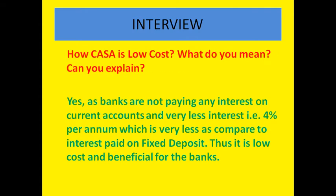Then the panel will ask you how CASA is low cost. Banks are paying 0% interest to the current account holder and banks are paying 4% interest to the savings account holder. The interest paid on current and savings accounts is less than other borrowings, so this is a low-cost source of funds.